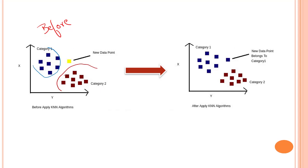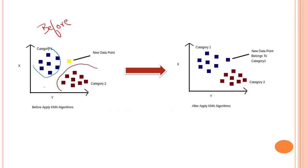These categories are nothing but two different classes, and then we add a new point. Let's say this is a fairly new point in our dataset — a new data point. After applying KNN, it will be able to predict that it belongs to the blue category, that is category one. So it will belong to that class. That is how KNN is used.